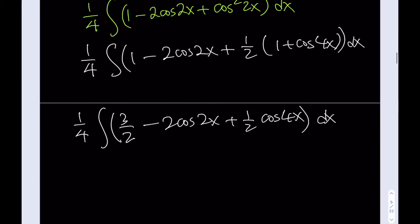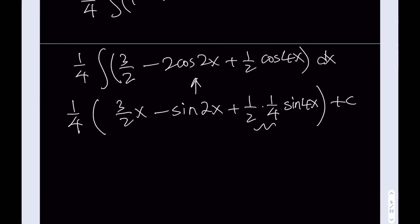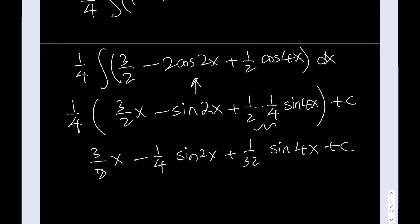Everything is now in the first power so we can integrate. The integral of 3/2 is 3/2 of x. The integral of cosine 2x is sine 2x (with the compensating factor). The integral of cosine 4x brings in a one-fourth factor, giving one-half times one-fourth equals one-eighth of sine 4x. Distributing the overall one-fourth factor, the final answer is 3/8 x minus 1/4 sine 2x plus 1/32 sine 4x plus c.